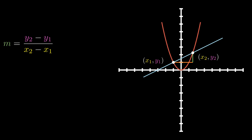Now before we plug these points into our formula, what we're going to do is a little substitution first. For our x1 and y1, instead of x1, we're going to label that as just x. And instead of y1, we're going to label that as f of x. They're pretty much the same thing, we're just renaming the values. But remember, this is a function, so this is completely fine — this is x and f of x. Now these points are a distance away from each other, and we don't know the exact value, so we're going to label that distance as h.